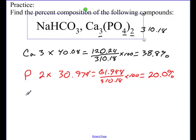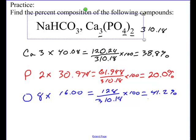And then last but not least, I'm going to do oxygen. And if you look up here, we've got 2 times 4, so that's 8 oxygen. So I've got 8 oxygen times 16.00 equals 128 divided by 310.18 times 100 equals 41.2%. And we add those all up just to double check, and you have 100%.